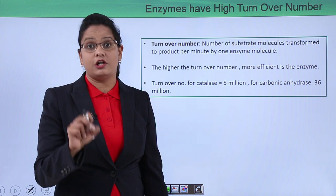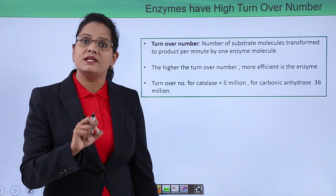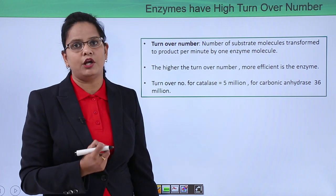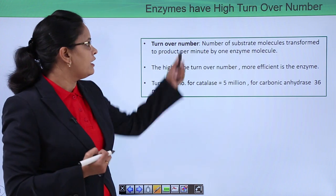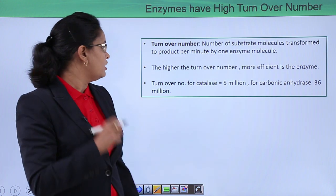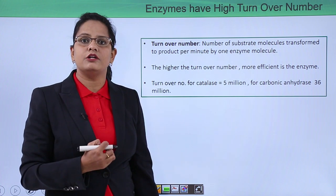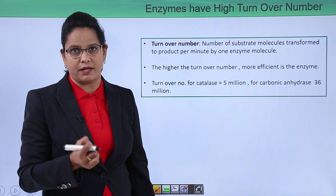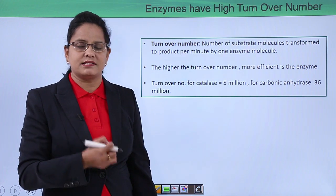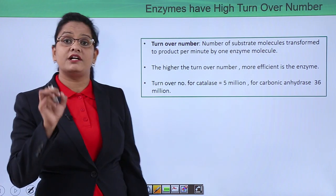Enzymes have a high turnover number, meaning they are very efficient. Turnover number is the number of substrate molecules converted into product per minute by one enzyme molecule. If the turnover number is higher, the enzyme is more efficient. For example, catalase has a turnover number of about five million per minute. Carbonic anhydrase is the most efficient enzyme, with a turnover number of around 36 million.